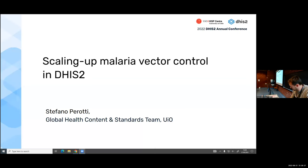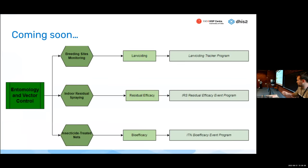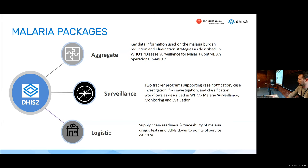Setting up malaria vector control. The malaria control is a component of a more comprehensive malaria program. It can be carried out by ministries of health in different countries. In DHIS2, we actually have two different types of packages: one where you can find information for malaria burden reduction or elimination strategies, and the surveillance part — two different tracker programs supporting case notification, case investigation, and classification workflow.